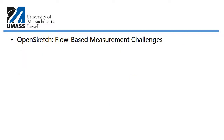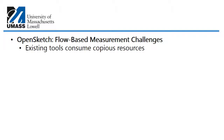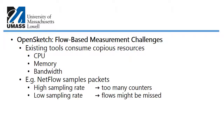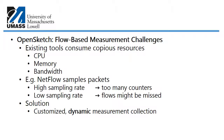When dealing with flow-based measurements, there are significant challenges. Existing tools consume a lot of resources — in particular CPU, memory, and bandwidth. For example, NetFlow does packet sampling. If the sampling rate is set too high it results in too many counters; if set too low, many flows may be missed. OpenSketch's solution is a customized dynamic measurement collection scheme that guarantees a certain level of accuracy.